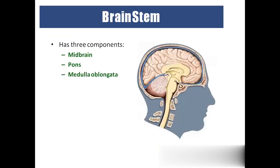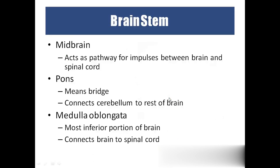The cerebellum is the second largest portion of the brain, located on the back side. It controls voluntary body actions, maintains balance and equilibrium, and refines muscular movements from the cerebrum. The brainstem consists of midbrain, pons, and medulla oblongata. The midbrain is the junction between the cerebrum and the spinal cord. Pons means bridge and connects the cerebellum with the rest of the brain. The medulla oblongata is the base of the brain, connecting the brain to the spinal cord.